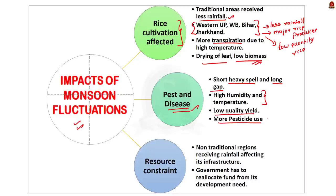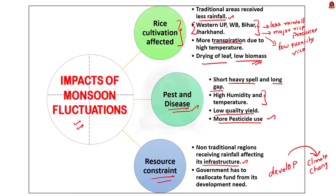This long period of high humidity and high temperature causes plant pests and diseases to increase, affecting the quality of agricultural yield and also increasing pesticide use by farmers — becoming a vicious cycle. Finally, climate change has increased resource constraints for the government, which has to invest in infrastructure in areas that don't traditionally receive rainfall, diverting funds from developmental activities and resulting in resource crunch affecting city development.